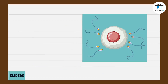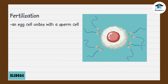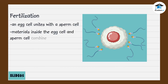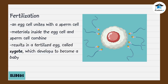When the gametes are ready, fertilization can take place. Fertilization is the process wherein an egg cell unites with a sperm cell. In this process, materials inside the egg cell and sperm cell combine. This process results in a fertilized egg called zygote, which develops to become a baby.